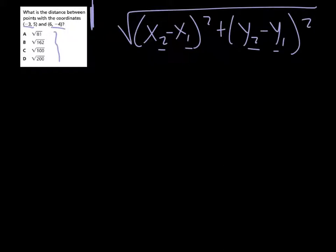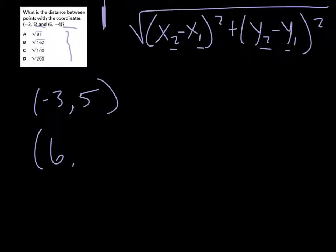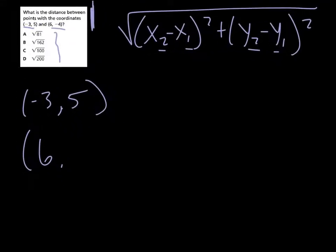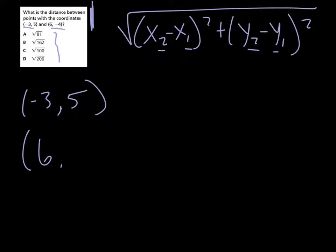So I'm gonna write these over here. So we've got (-3, 5) is a coordinate, and (6, -4) is a coordinate as well. Oh, that's cool, didn't mean to do that. Sorry everybody. (-4) is a coordinate.